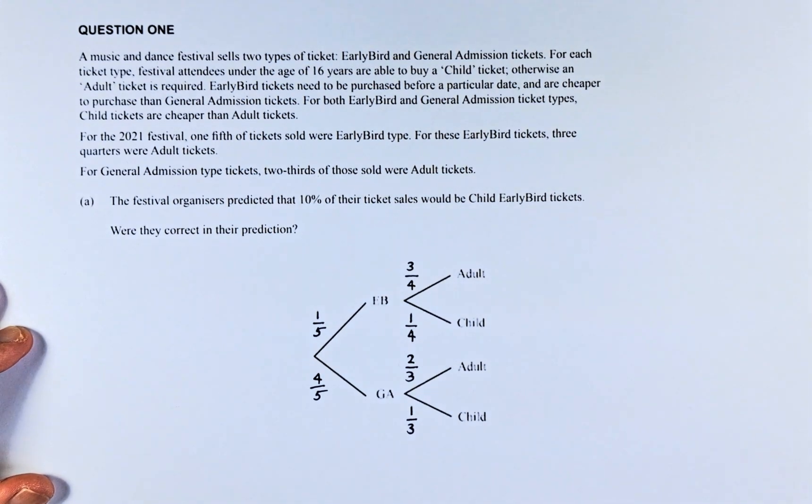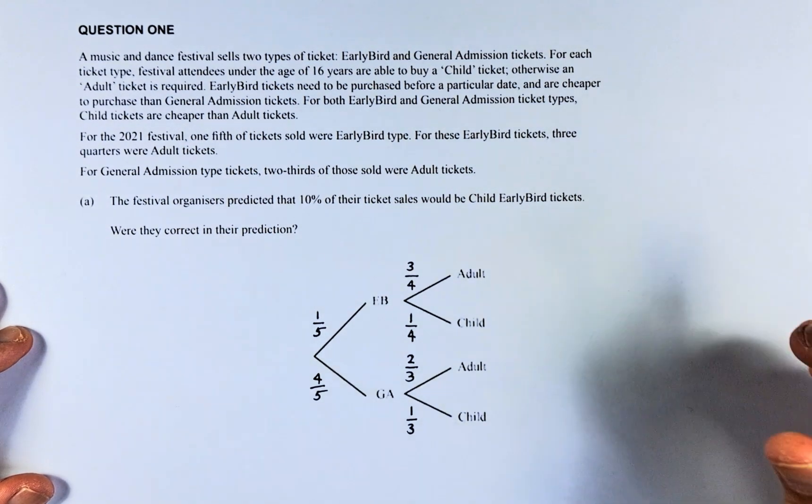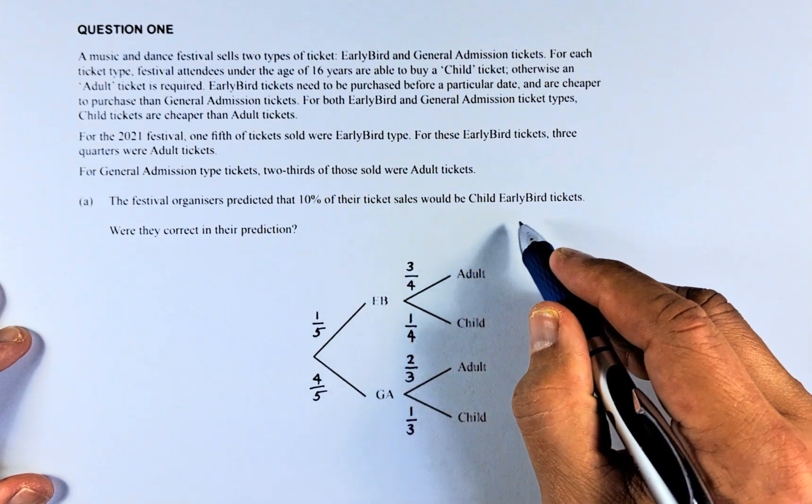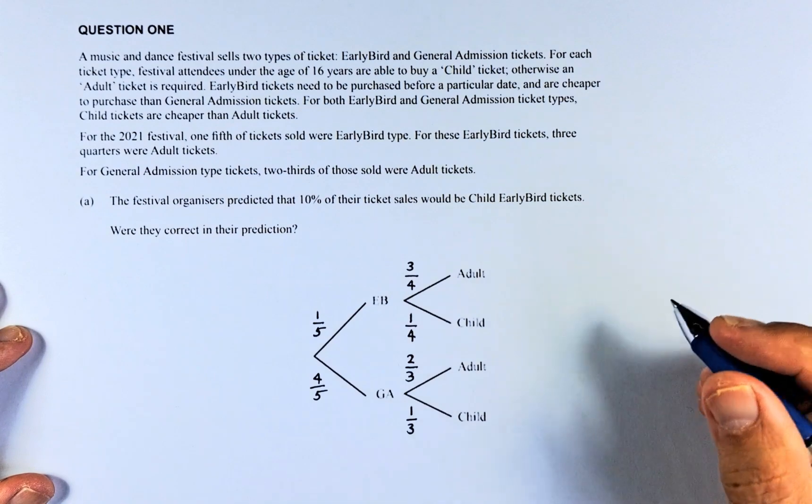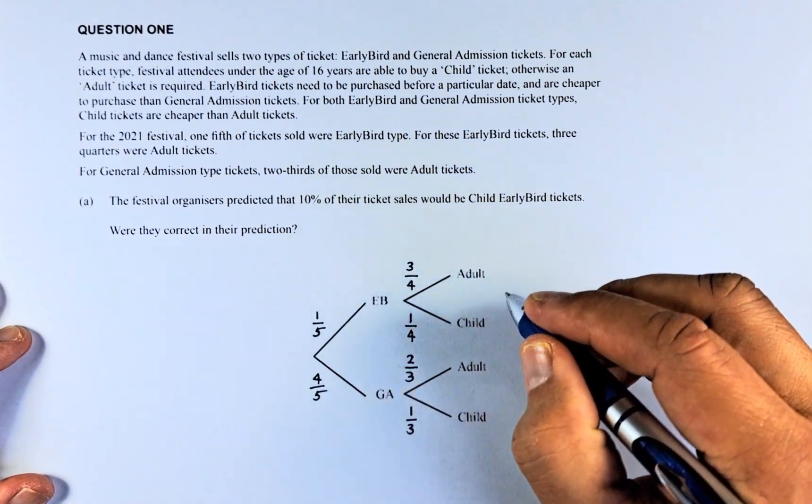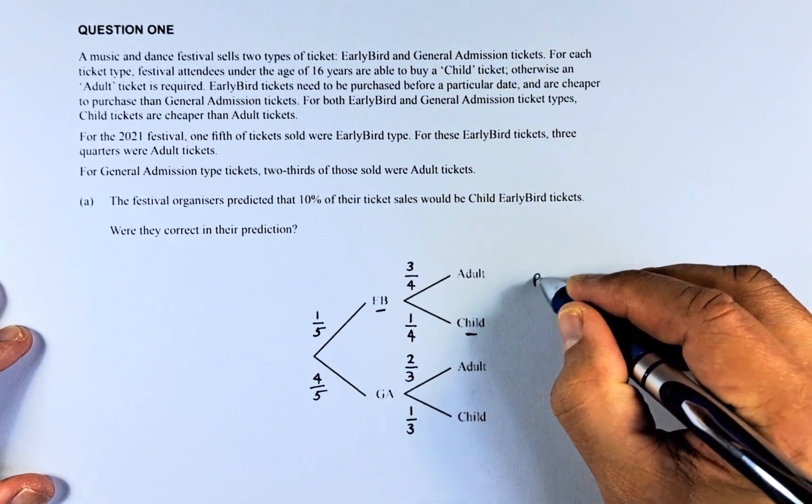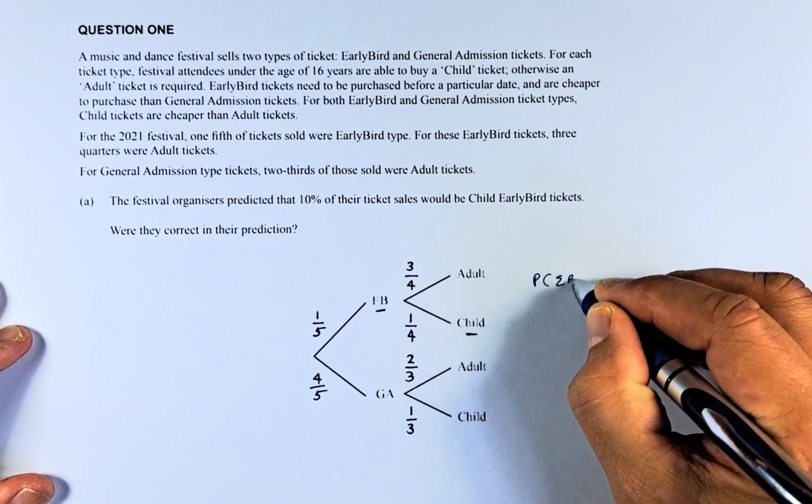So now once we have done this, we are going to answer the question. The festival organisers predicted that 10% of their ticket sales would be child early bird tickets. Were they correct in their prediction? So child early bird, early bird is here, child is here. So the probability of early bird and child, that will be this probability.